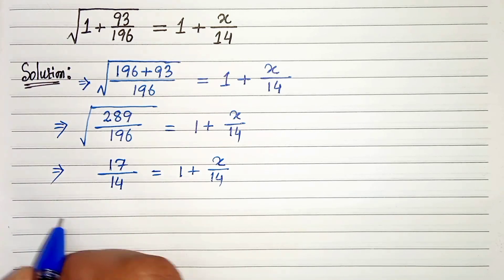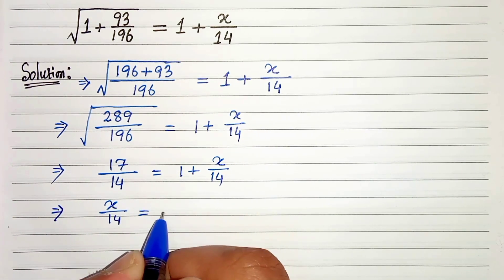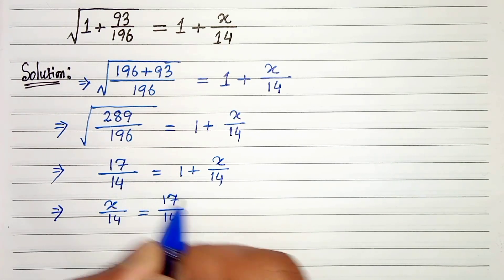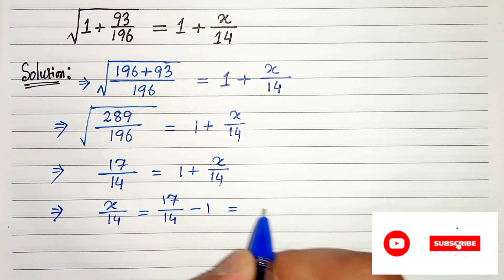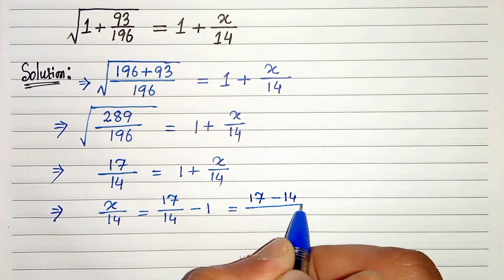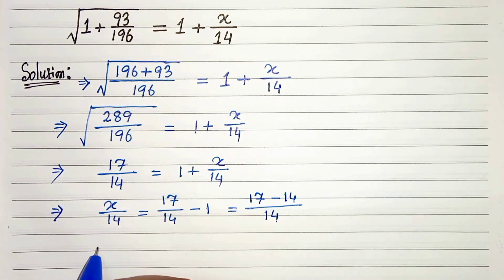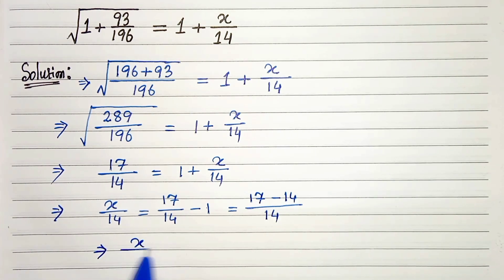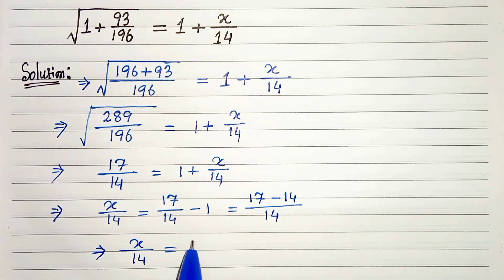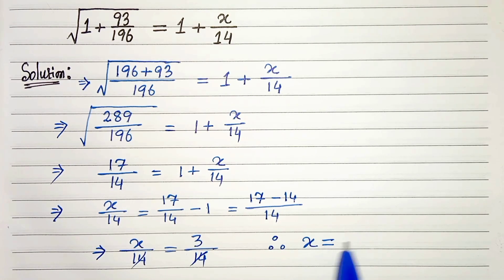In the next step we can write x by 14 is equals to 17 by 14 minus 1, which is equals to 17 minus 14 divided by 14. So 17 minus 14 is 3 divided by 14. 14 and 14 get cancelled, so we get x is equals to 3.